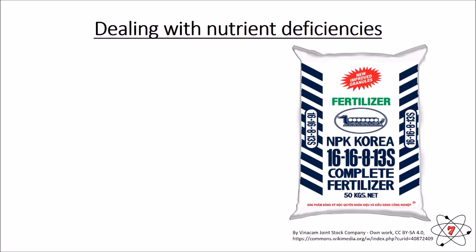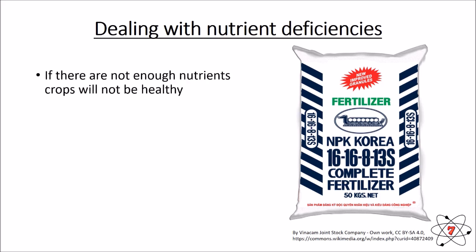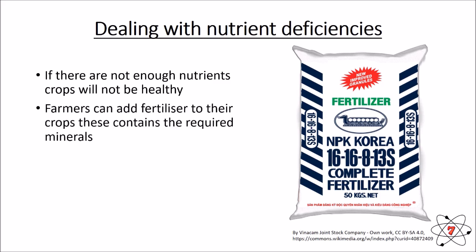If you're a farmer, you really do not want your crops to be deficient in any nutrients. Deficient means you do not have enough of a specific nutrient. If there are any deficiencies then crops are not going to be healthy, so farmers can add fertilizer to their crops — these contain the required minerals that help plants to become healthy and to grow well.